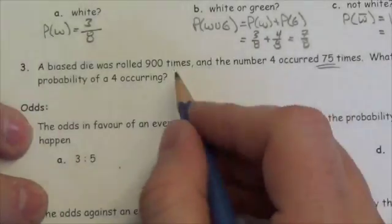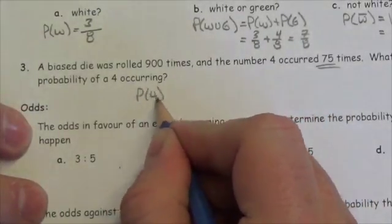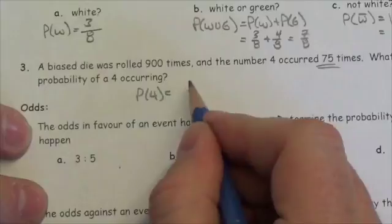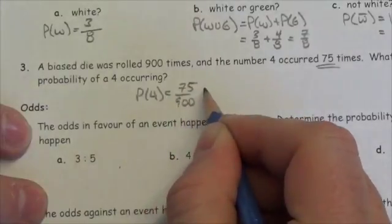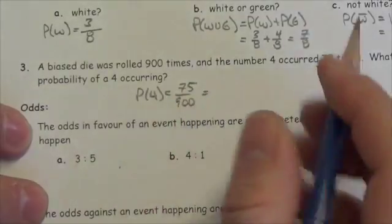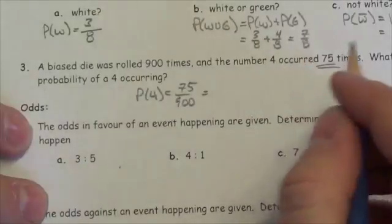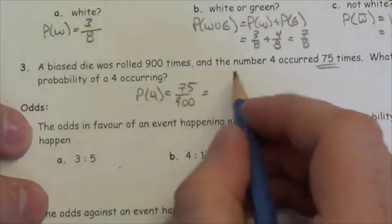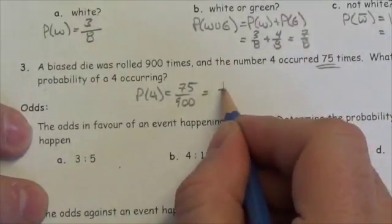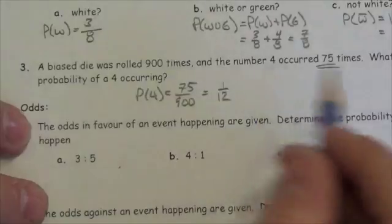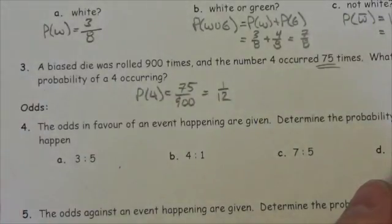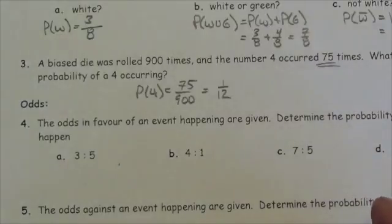So in this case, the probability of a 4 turned out to be 75 over 900. I've gone to the calculator and figured that out and reduced it — this reduces down to 1/12. So the probability of a 4 coming up is 1/12. That's half what it should be, so something's not quite right with that die.